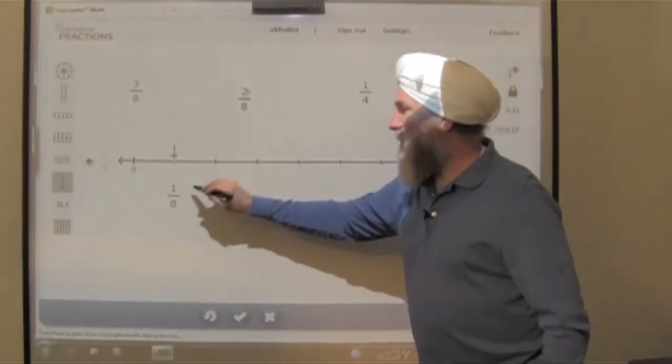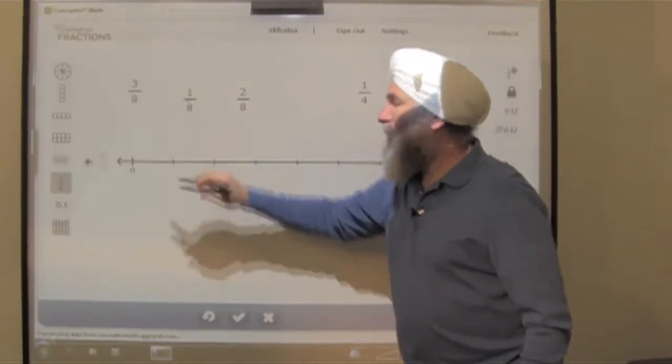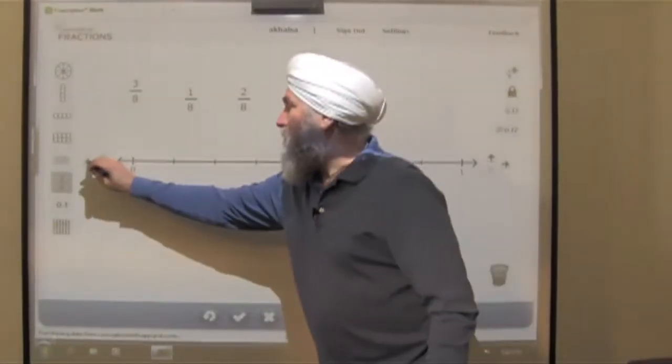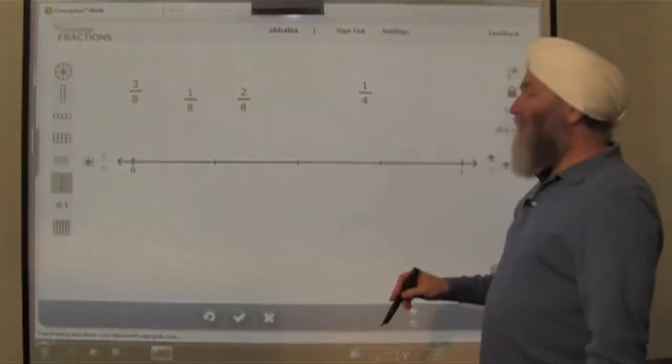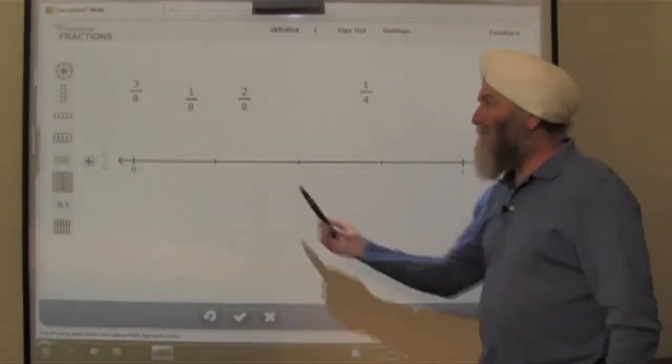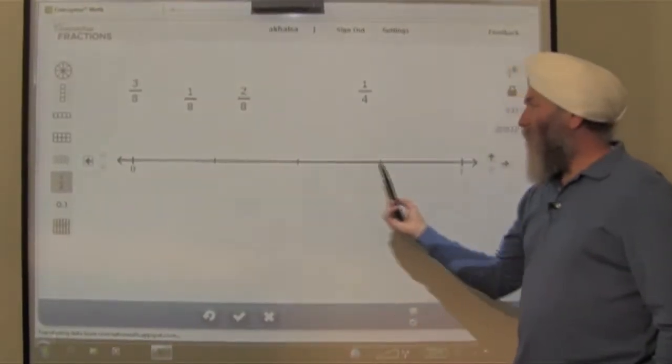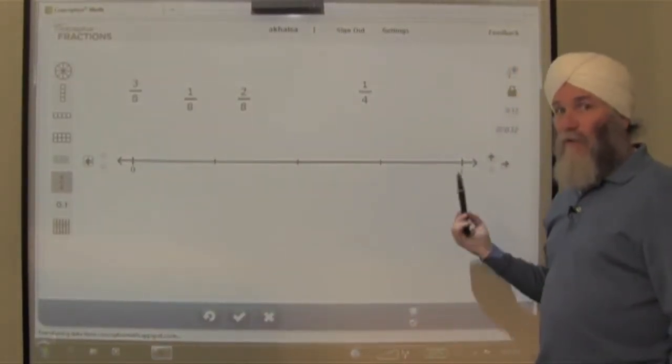But I'm going to change the number line a little bit. I'm going to remove some of the partitions so that now the number line is divided into fourths. 1 fourth, 2 fourths, 3 fourths, and then to 1 or 4 fourths.